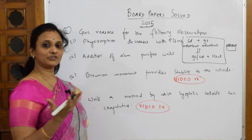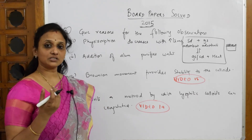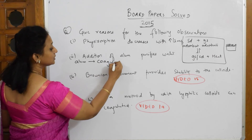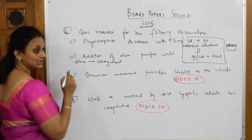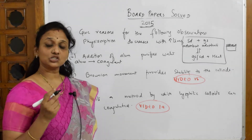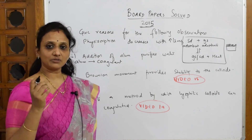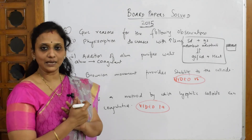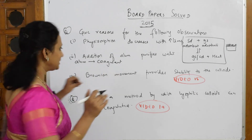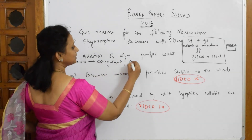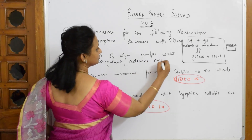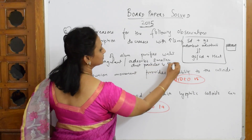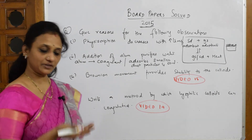Alum is basically a form of clay. It is used for purifying water, and it acts as a coagulant. What it does is adsorb all the fine particles — small dust particles and impurities of smaller size — everything goes and attaches onto the surface of alum. It acts as a coagulant and absorbs smaller dust particles and sand.